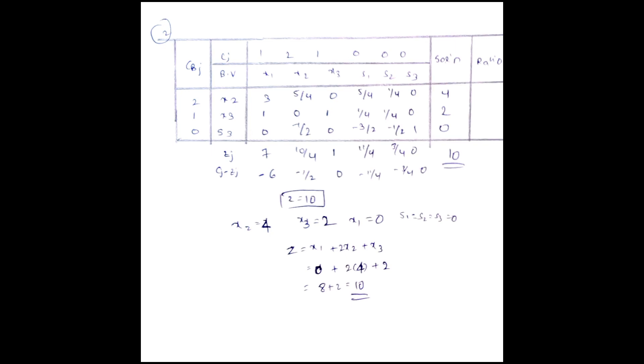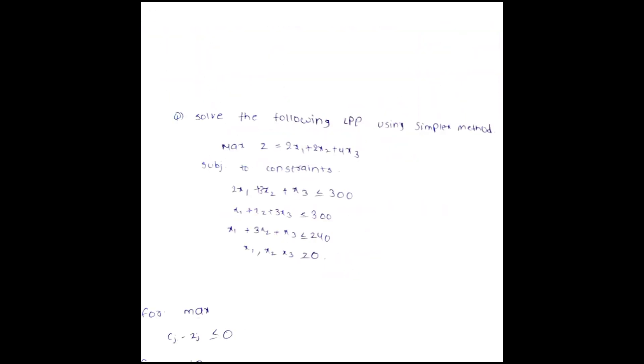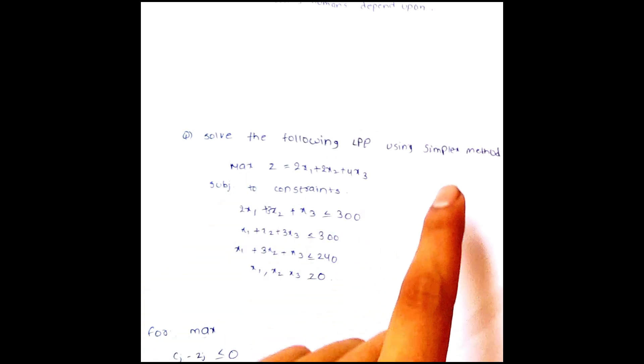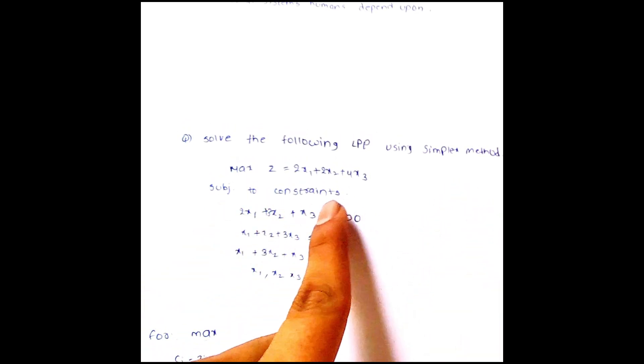This is the way to solve simplex method questions. Let me give you another question to practice: Solve the following LPP using simplex method — max z equal to 2x1 plus 2x2 plus 4x3, subject to: 2x1 plus 3x2 plus x3 ≤ 300; x1 plus x2 plus 3x3 ≤ 300; x1 plus 3x2 plus x3 ≤ 240; x1, x2, x3 ≥ 0. Comment your answer and I will clarify any doubts. Our next video is about the two-phase simplex method. Thank you!